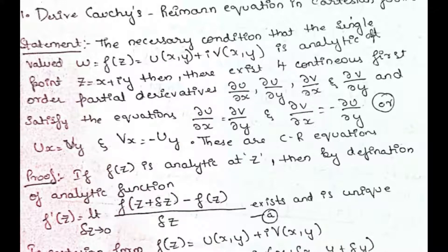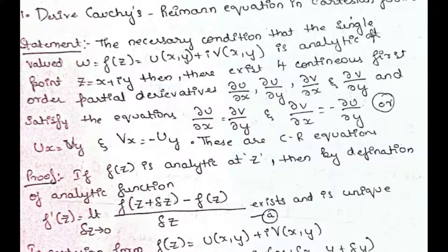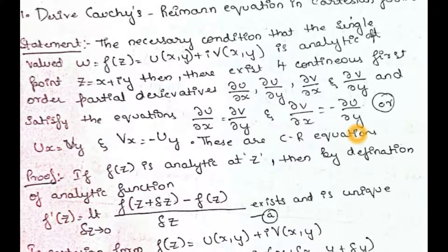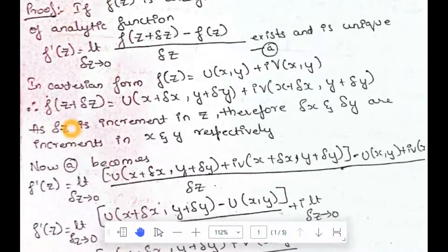If f(z) is analytic at point z, then there exist 4 continuous first-order partial derivatives: ∂u/∂x, ∂u/∂y, ∂v/∂x, and ∂v/∂y. These 4 derivatives satisfy the CR equation: ∂u/∂x = ∂v/∂y and ∂v/∂x = -∂u/∂y. This is the CR equation.